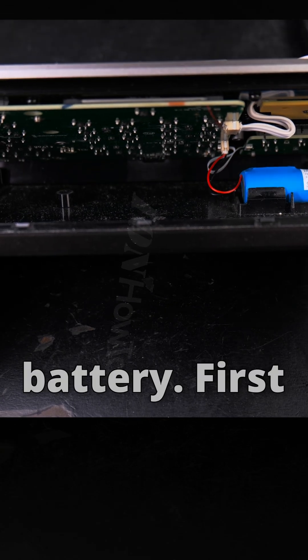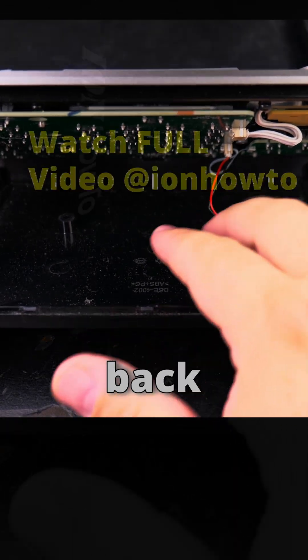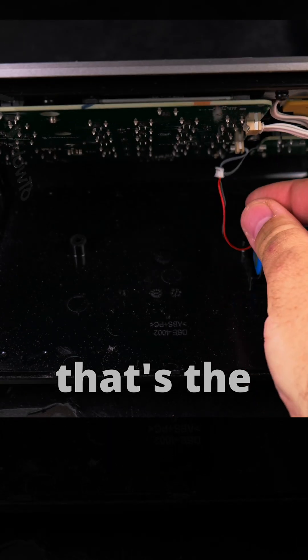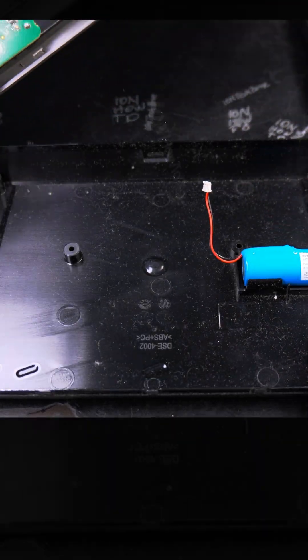Now you have the battery. First you have to disconnect the battery so you can separate the back from the front, and that's the connector, it's out, and the whole battery.